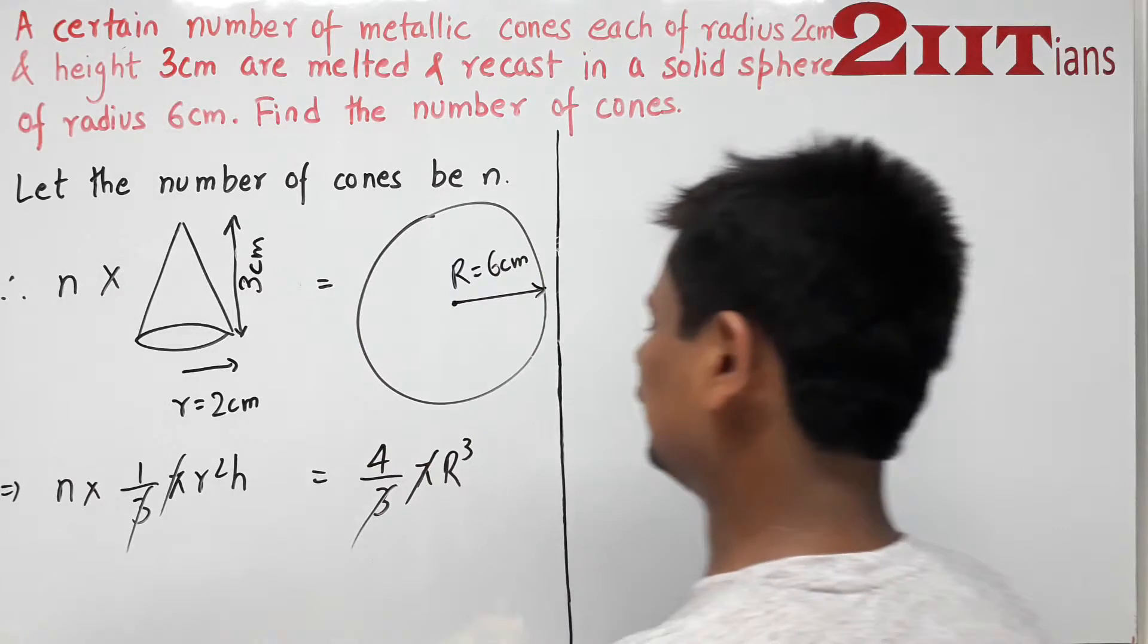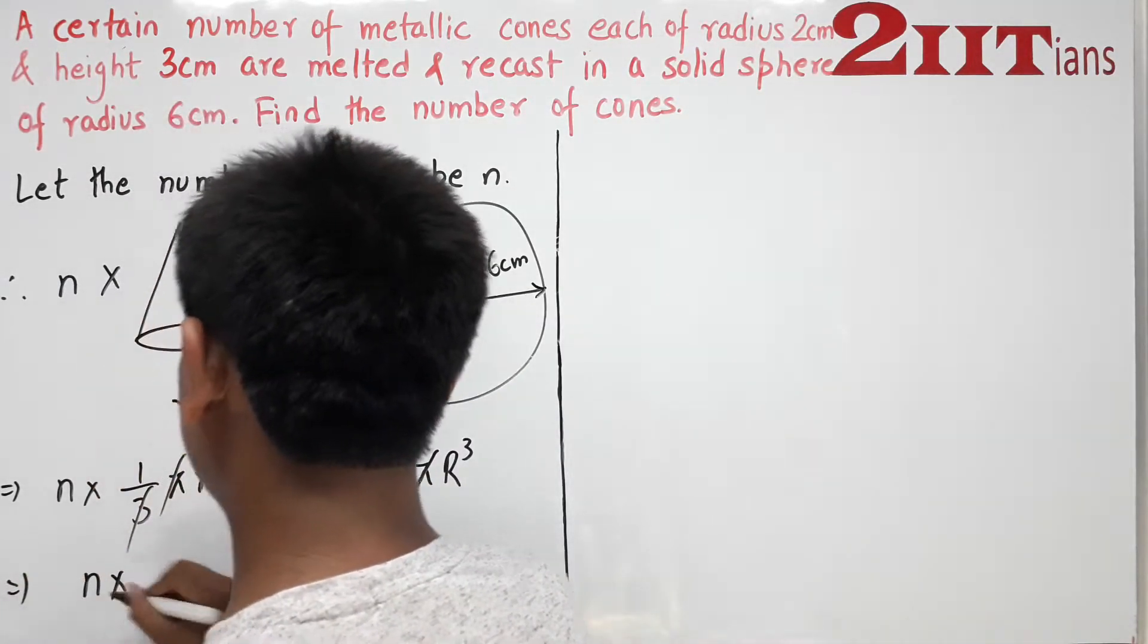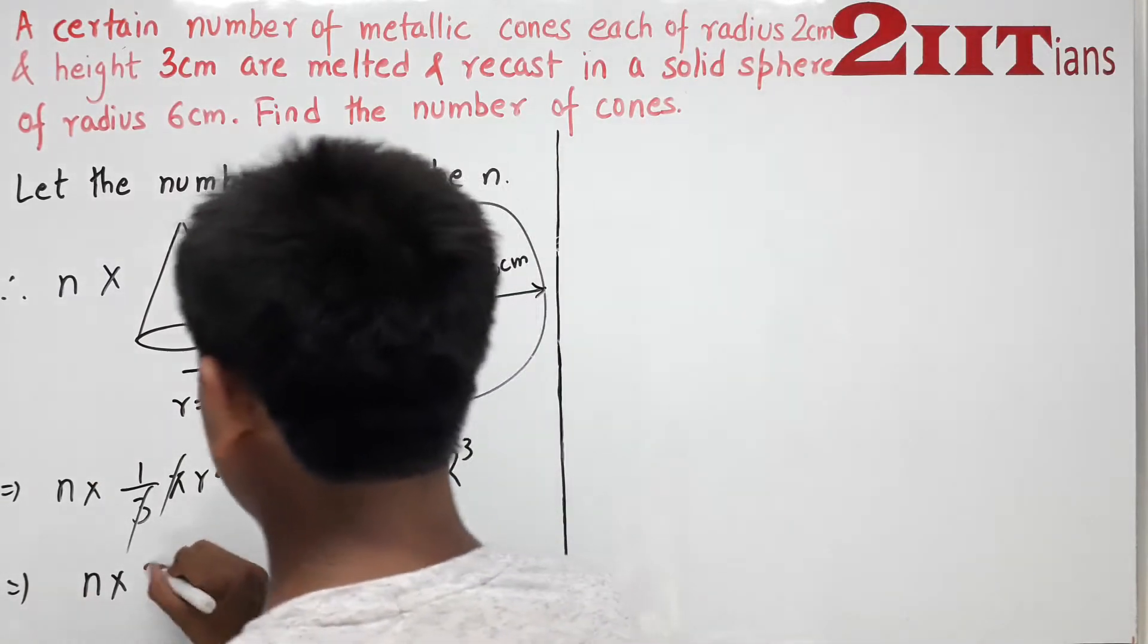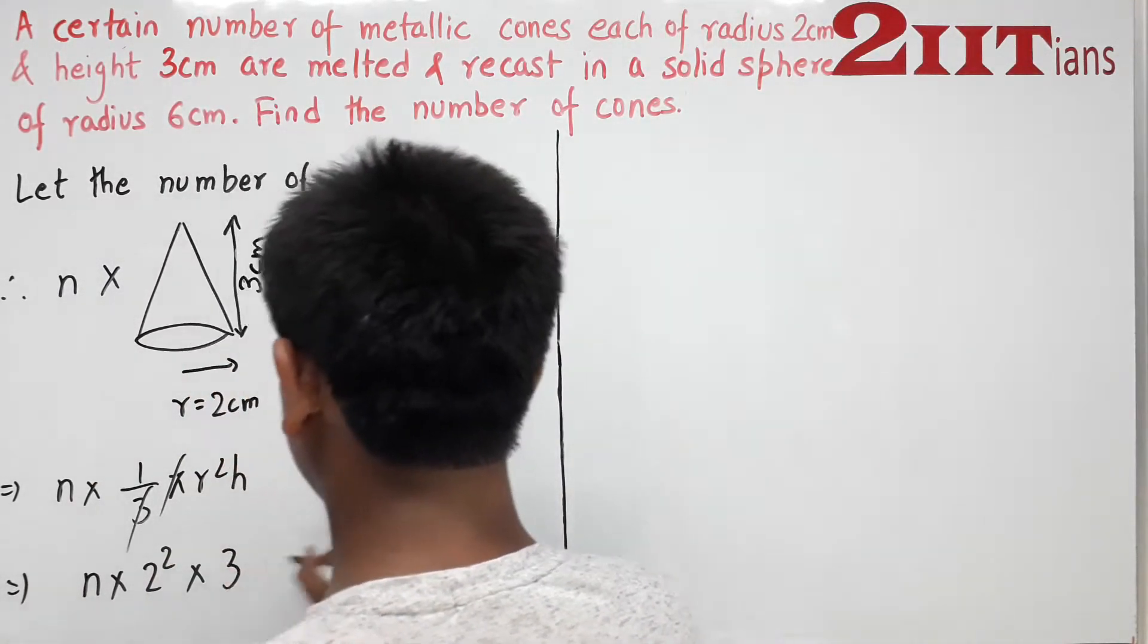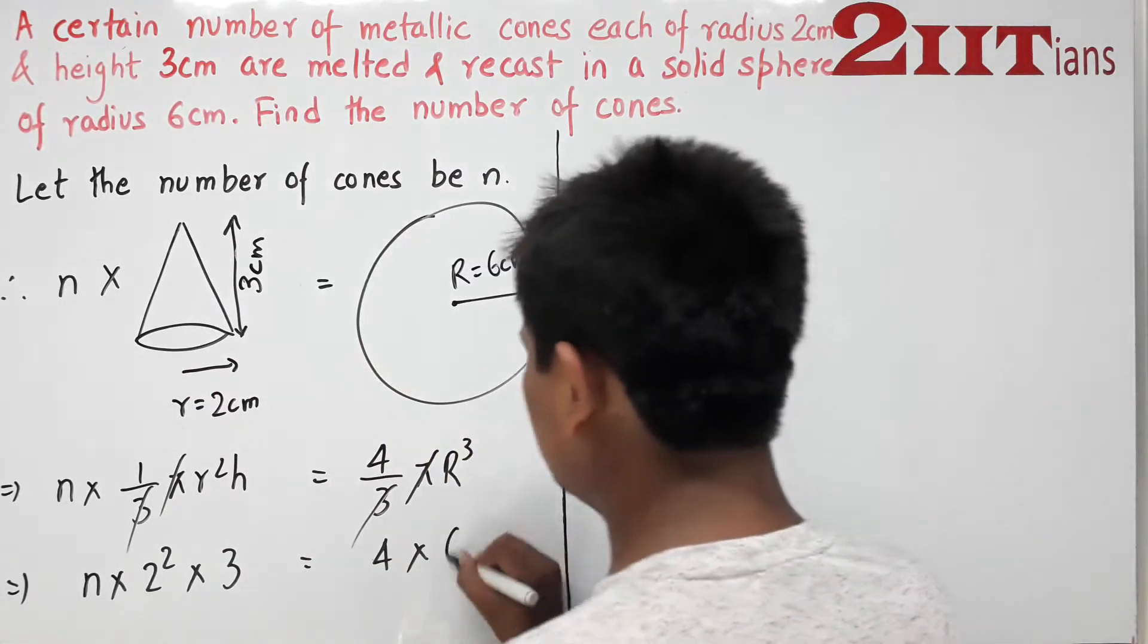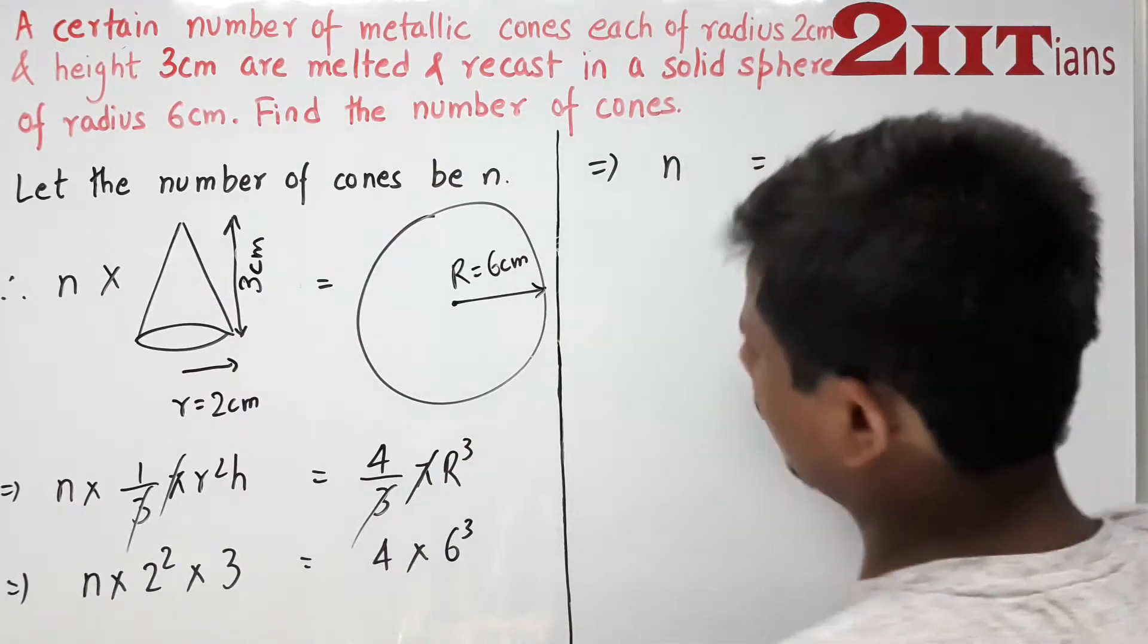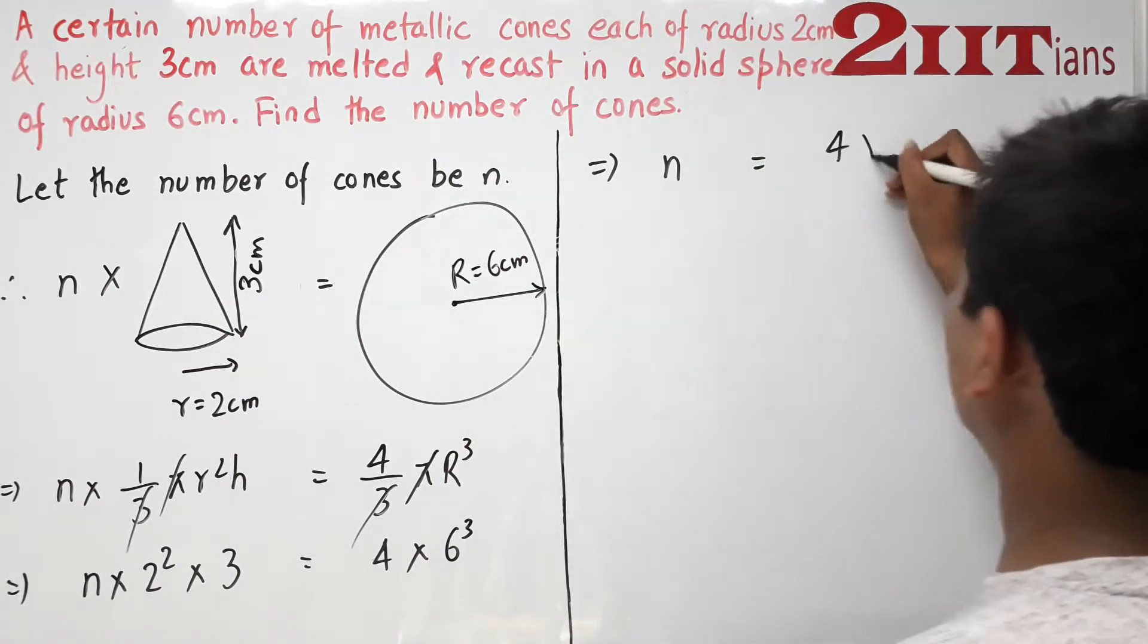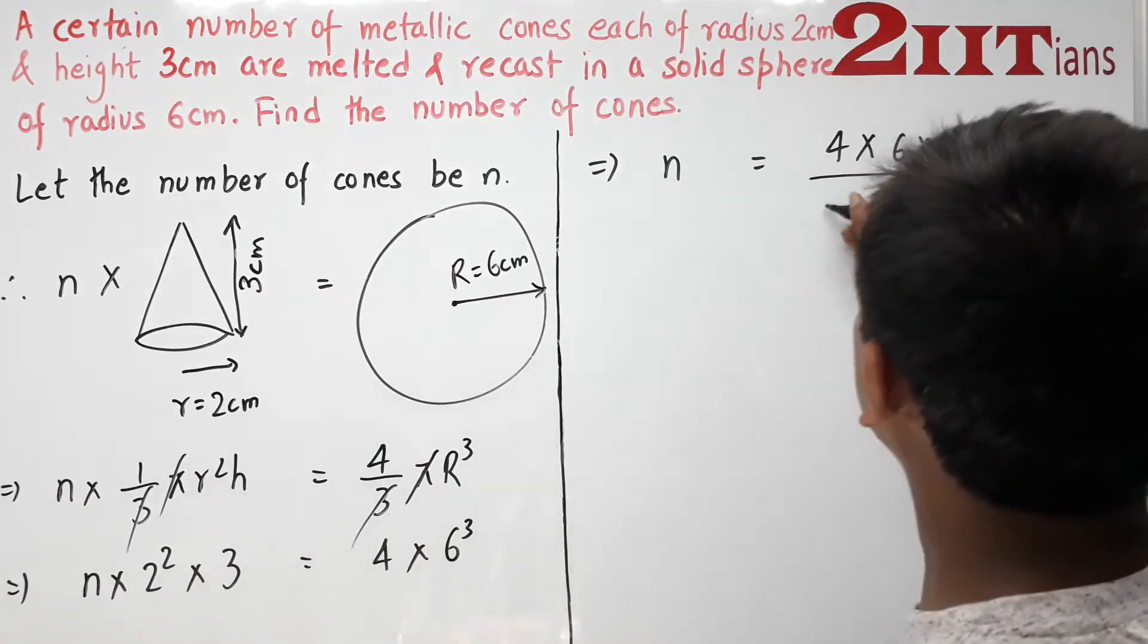Now we have n multiplied by small r, which is 2 squared, times h which is 3, equals 4 multiplied by capital R which is 6 cubed.